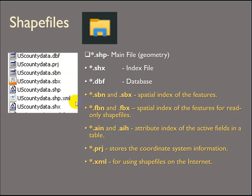The .prj is the projection file — it stores the coordinate system or spatial reference for the dataset. If a dataset has this, it's pretty handy. If you're copying or sharing the data, grab the .prj too. But the moral of the story is grab them all. If you're in Windows Explorer — which I wouldn't recommend — make sure you grab all file extensions associated with that file name.